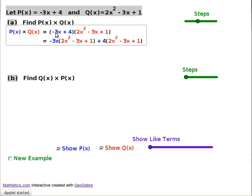When you're expanding, you write each term in the first bracket multiplied by all of the terms in the second bracket. So we've got the first term, minus 3x, multiplied by all of Q of x, and plus 4 multiplied by all of Q of x.